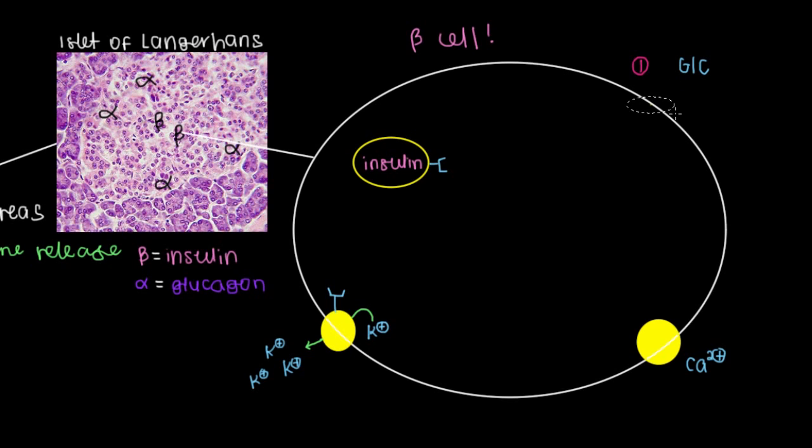And the way it enters is through this unique transporter. It's called the GLUT2 transporter. And it allows glucose to enter into your beta cell. Once we get glucose inside of the cell, glucose will undergo what it usually does in most cells.